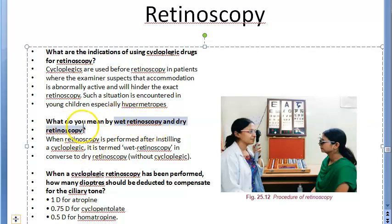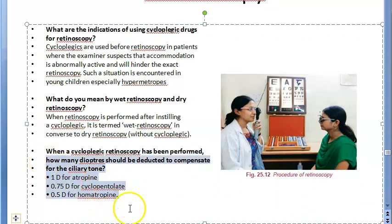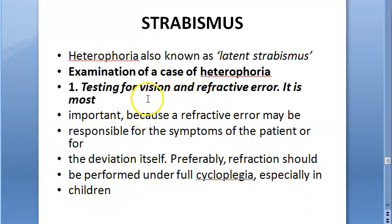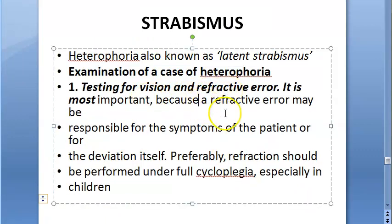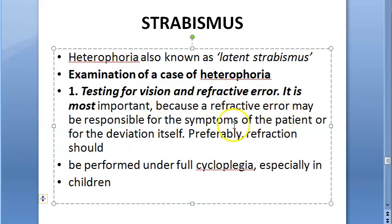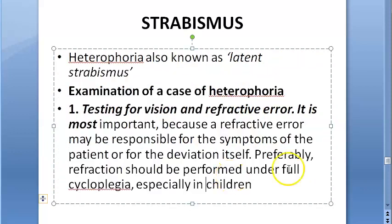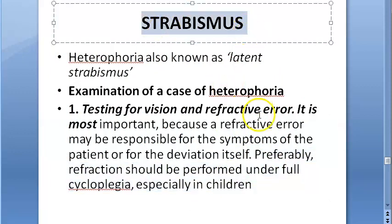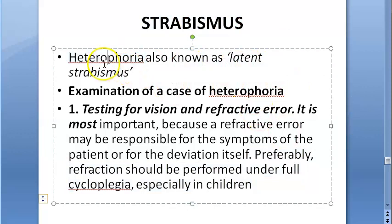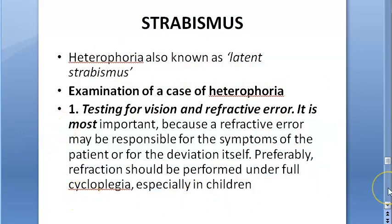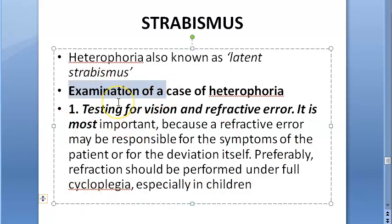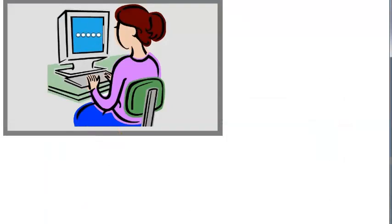There is wet retinoscopy — performed after giving a cycloplegic — and dry retinoscopy. After wet retinoscopy, some adjustment or compensation needs to be made. Cycloplegics are also used when testing for strabismus and refractive error. Refraction should be performed under full cycloplegia especially in children, even if they have strabismus. Heterophoria — latent strabismus, or squint — is a specific indication.